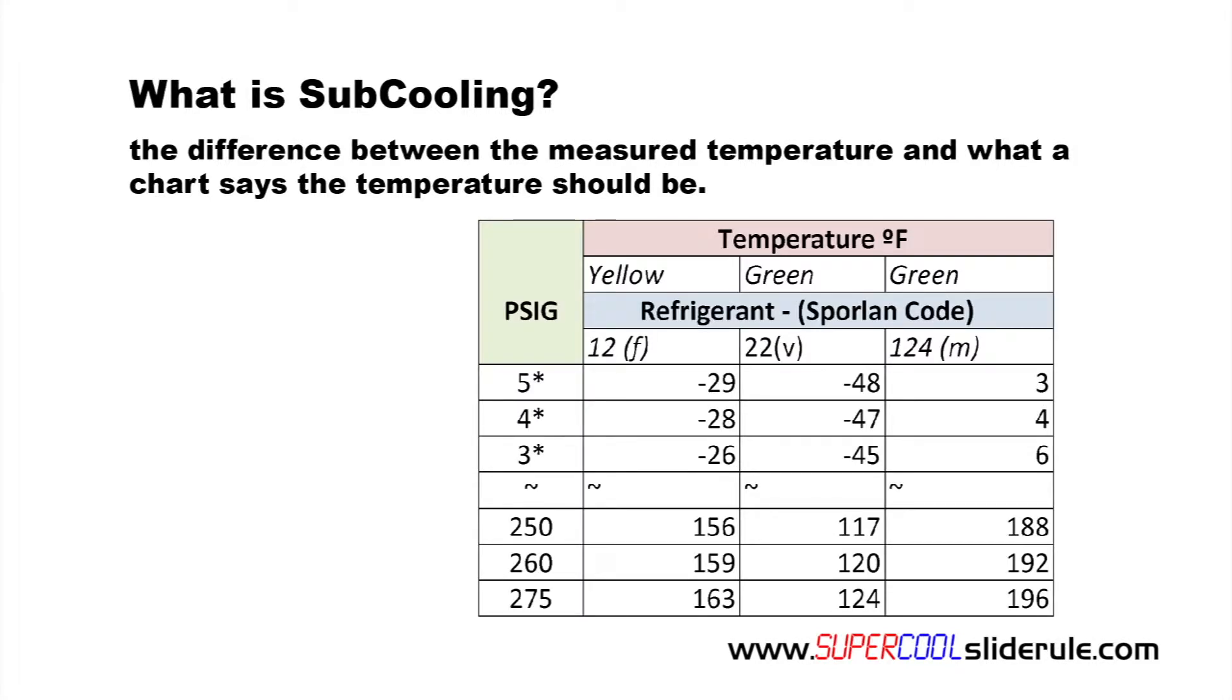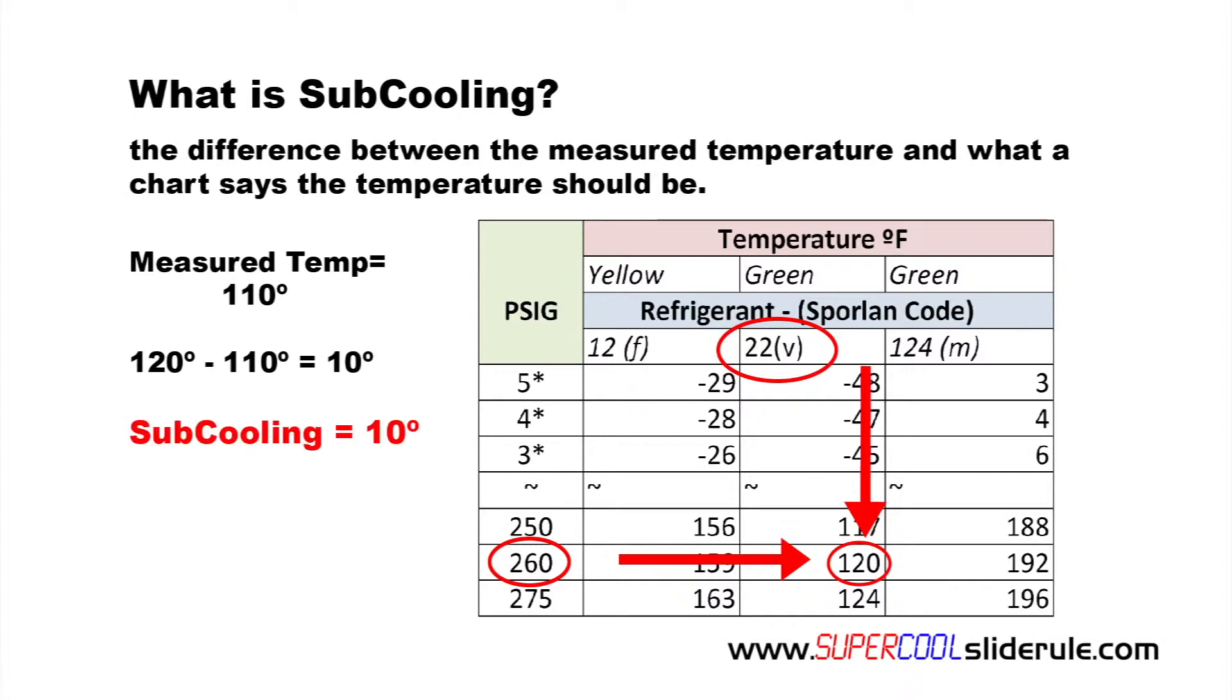Here is an example. If we reference a temperature chart for R22, we will note that at 260 psig, our temperature should be 120 degrees. If we measure the temperature of the refrigeration liquid line, and it is actually 110 degrees, this is 10 degrees cooler than it should be, so our subcooling is 10 degrees.